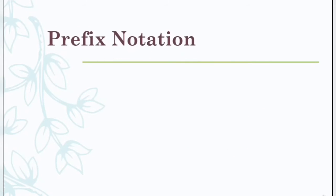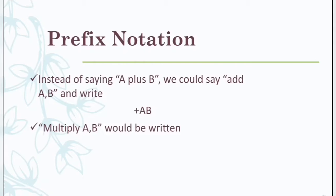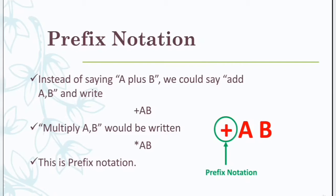The next one is prefix notation. Instead of saying A plus B we could write plus A B, and while multiplying A and B we would write it as star A B. This is prefix notation — the operator is given in front of the operands. Whenever the operator is in the first position, the expression is called a prefix expression or prefix notation.